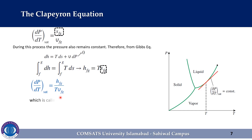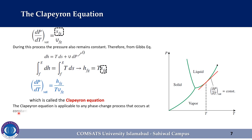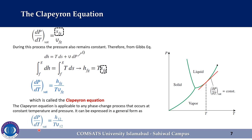This is called the Clapeyron equation, after the French engineer Émile Clapeyron. This is an important thermodynamic relation since it enables us to determine the enthalpy of vaporization at a given temperature by simply measuring the slope of the saturation curve on a pT diagram and the specific volume of saturated liquid and saturated vapor at the given temperature. The Clapeyron equation is applicable to any phase change process that occurs at constant temperature and pressure, and can be expressed in a general form as dp over dT is equal to Hfg over T times Vfg, where subscripts 1 and 2 indicate the two phases.